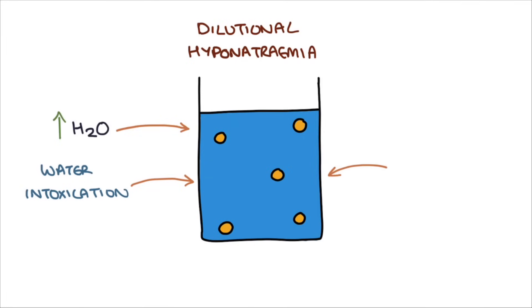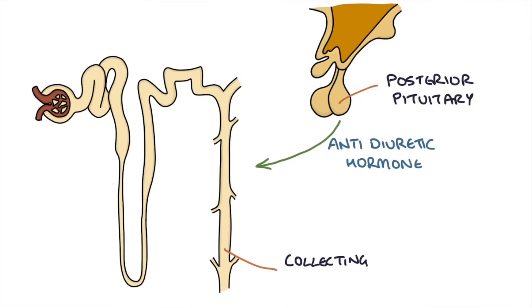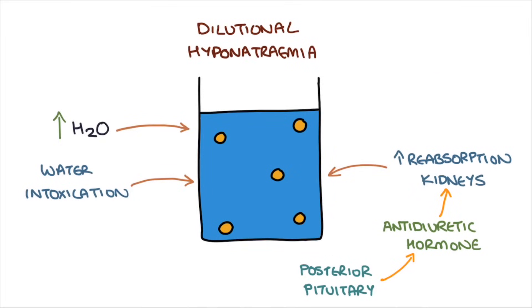Another way to add water is by increasing the reabsorption of water in the kidneys. A hormone called antidiuretic hormone from the posterior pituitary gland acts on the collecting ducts in the kidneys to increase water reabsorption from the urine back into the blood. Therefore, if you add more antidiuretic hormone, more water is reabsorbed into the blood and the sodium concentration becomes more dilute. Usually, antidiuretic hormone is carefully controlled to balance the amount of water in the blood.